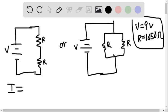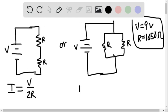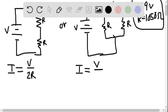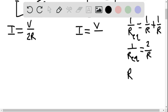So I is V over R, but the resistance here is 2R. I equals V over R, but the resistance here would be 1 over resistance equivalent is 1 over R plus 1 over R, which would be the same as 2 over R. So REQ is going to be R over 2.